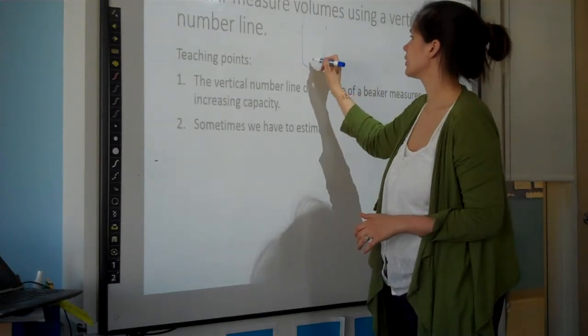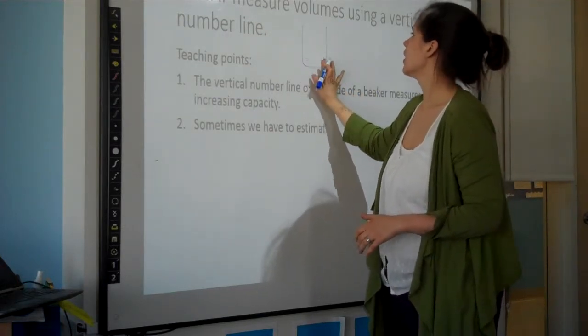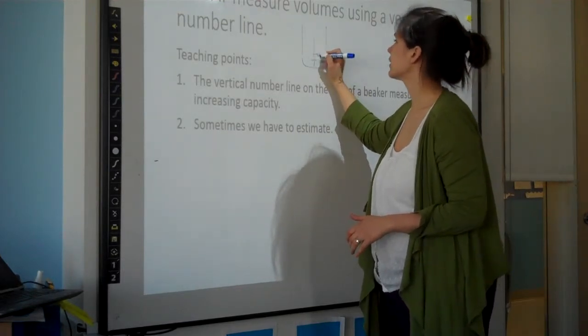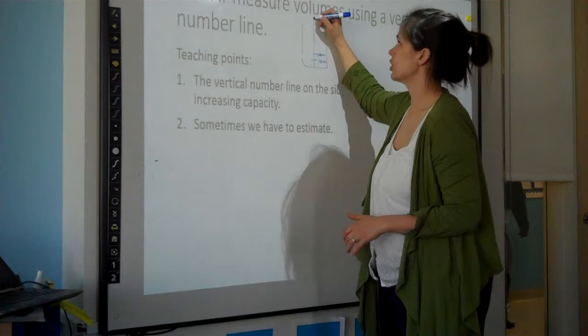Basically, you're going to take the two-liter bottle and pour in a hundred milliliters and mark it, and pour in a hundred milliliters and mark it until you've made a liter.